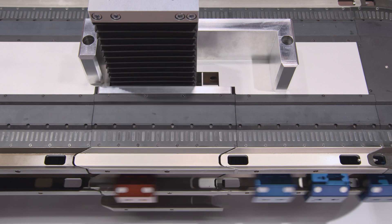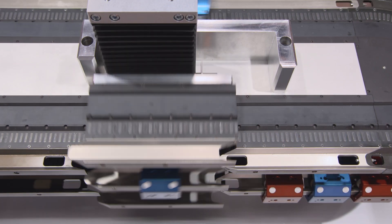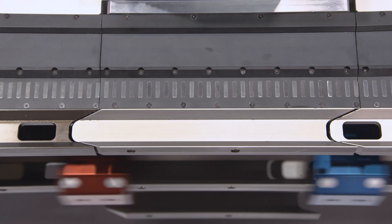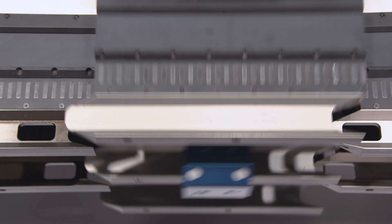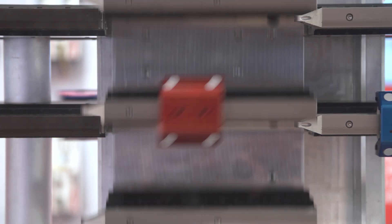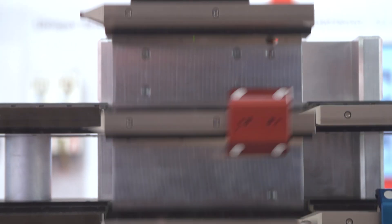In this case, it is possible with the XTS to have the movers leave the actual transport track and allow those optical inspection or quality checks to take place in other areas without any negative impact on the speed of the machine.